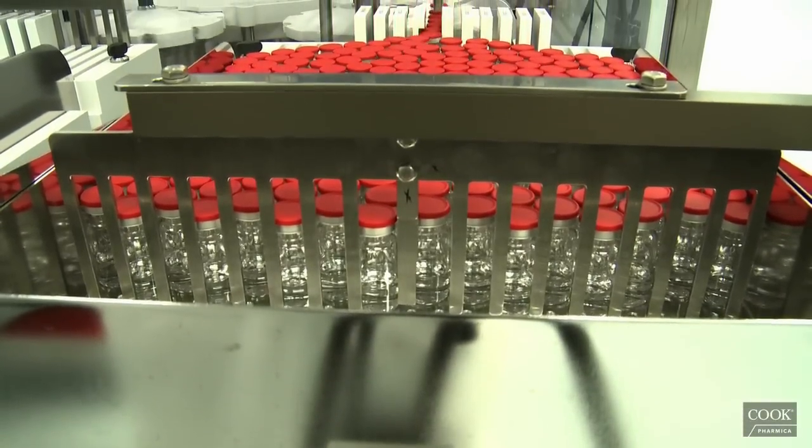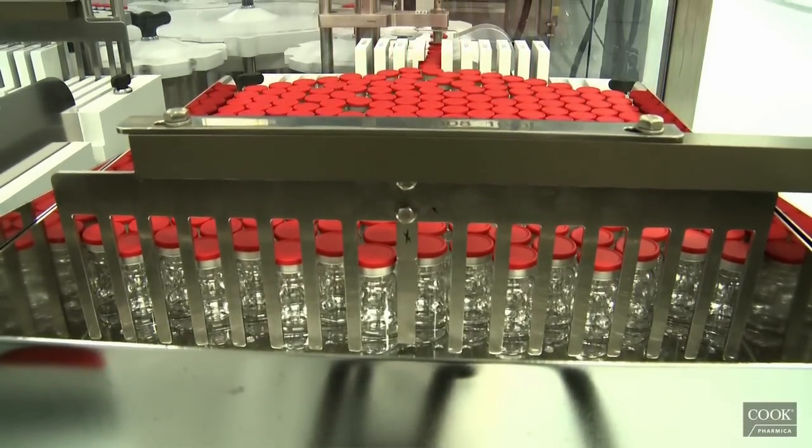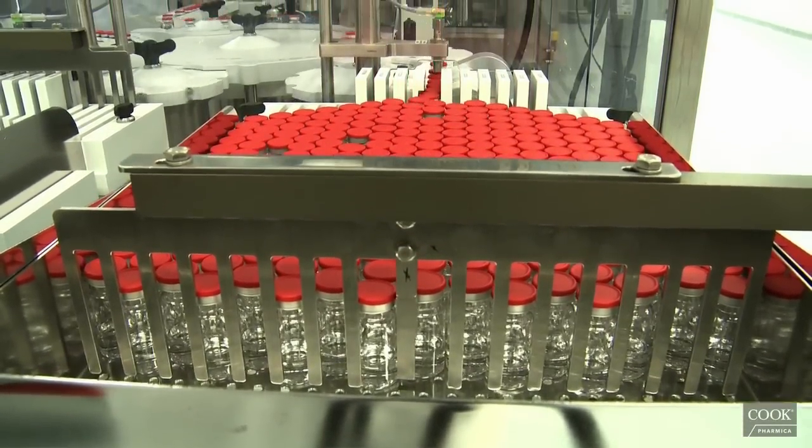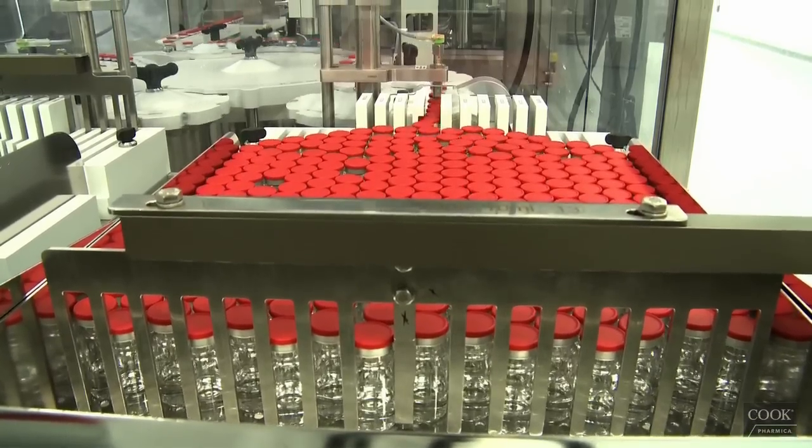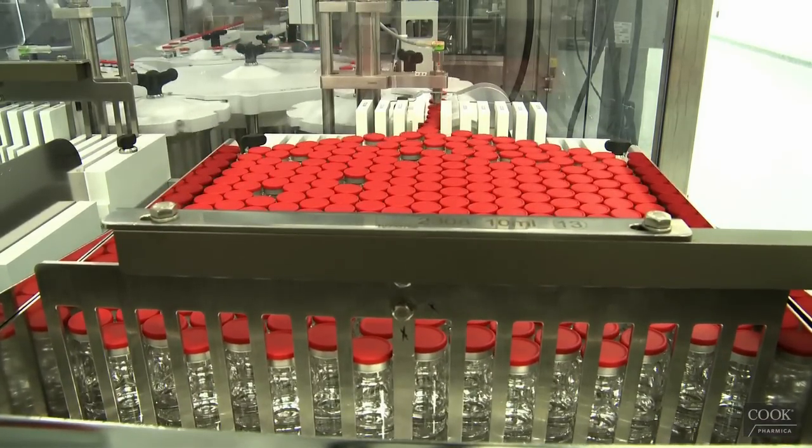During tray loading, vials are identified with UV excitable barcodes or human readable inkjet screening on the caps. The vials are also counted as they are loaded into the trays.